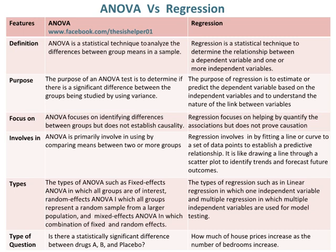The types of ANOVA include fixed-effects ANOVA, in which all groups are of interest; random-effects ANOVA, in which all groups represent a random sample from a larger population; and mixed-effects ANOVA, which is a combination of fixed and random effects. Whereas, the types of regression include linear regression, which uses one independent variable, and multiple regression, which uses multiple independent variables for model testing.